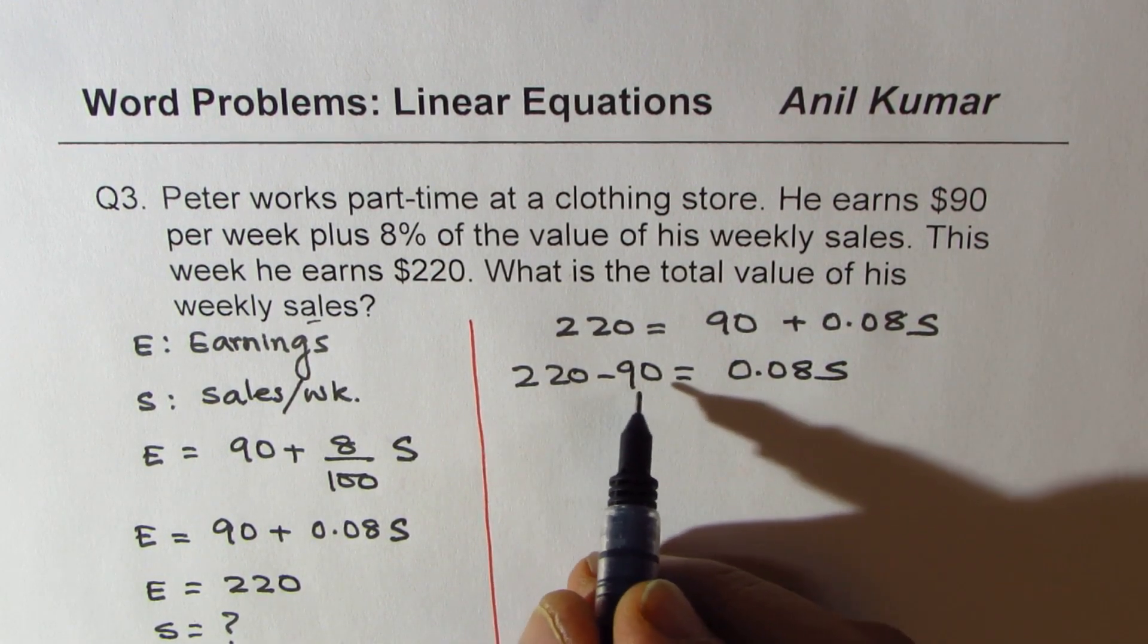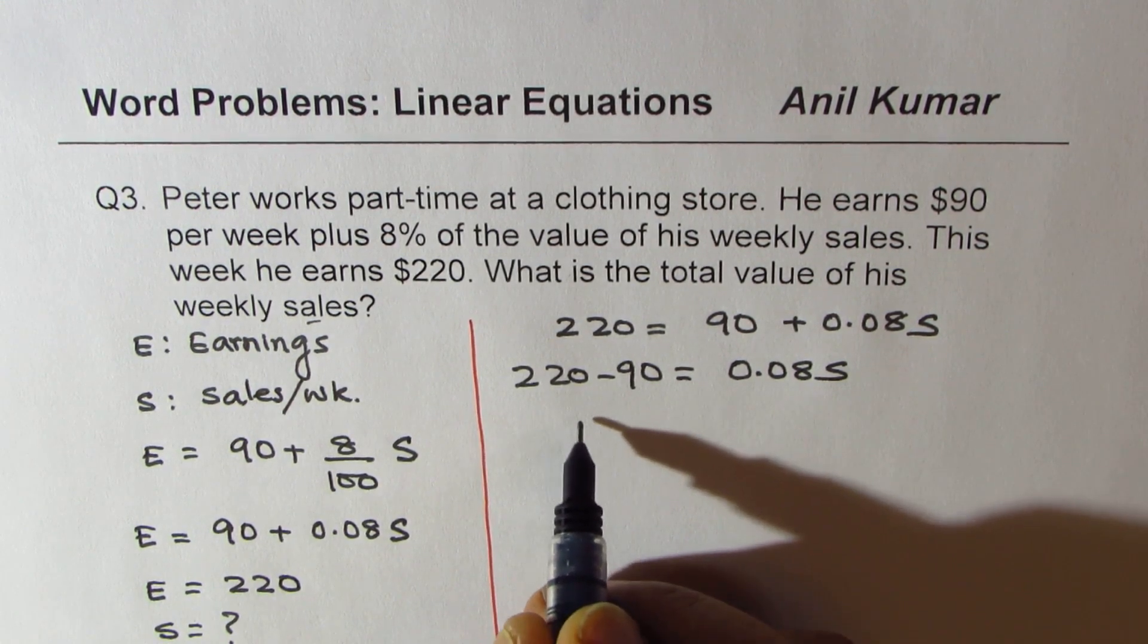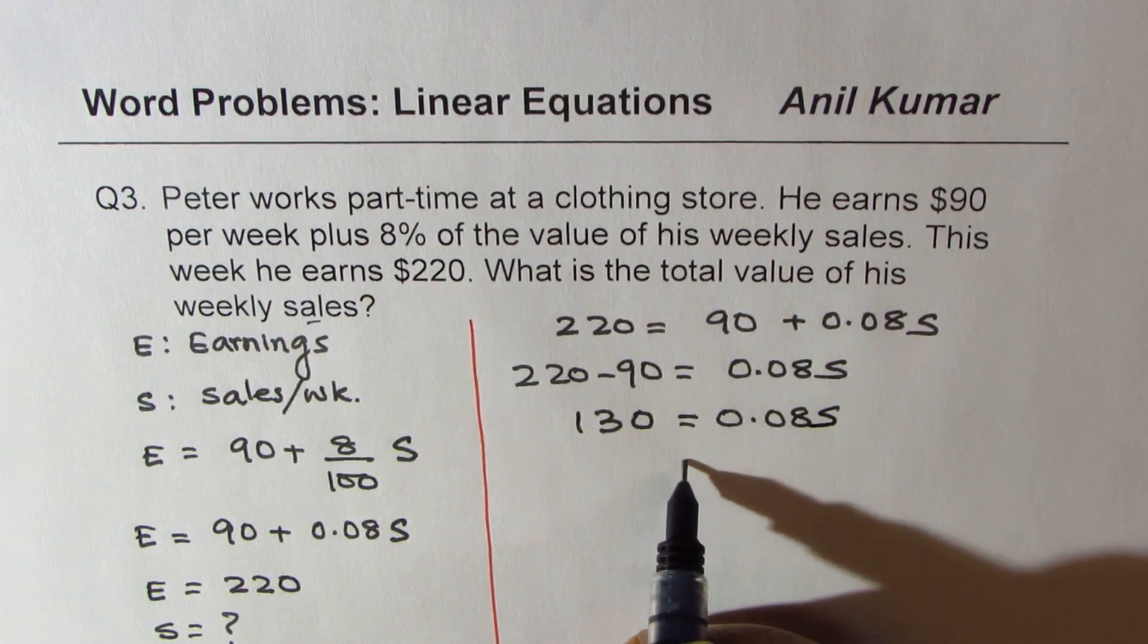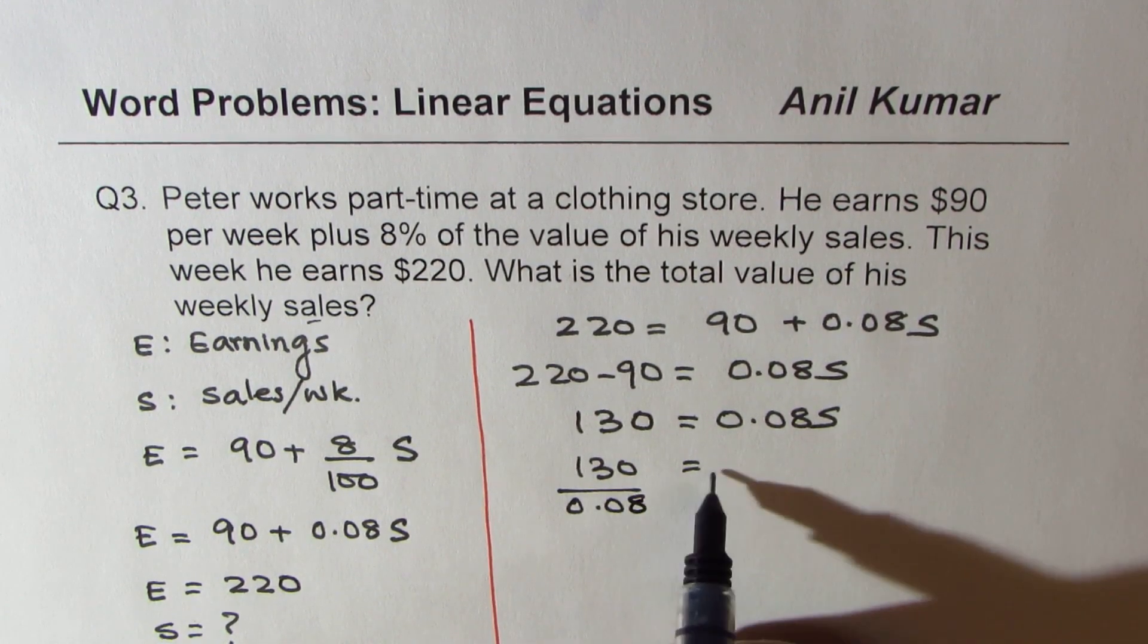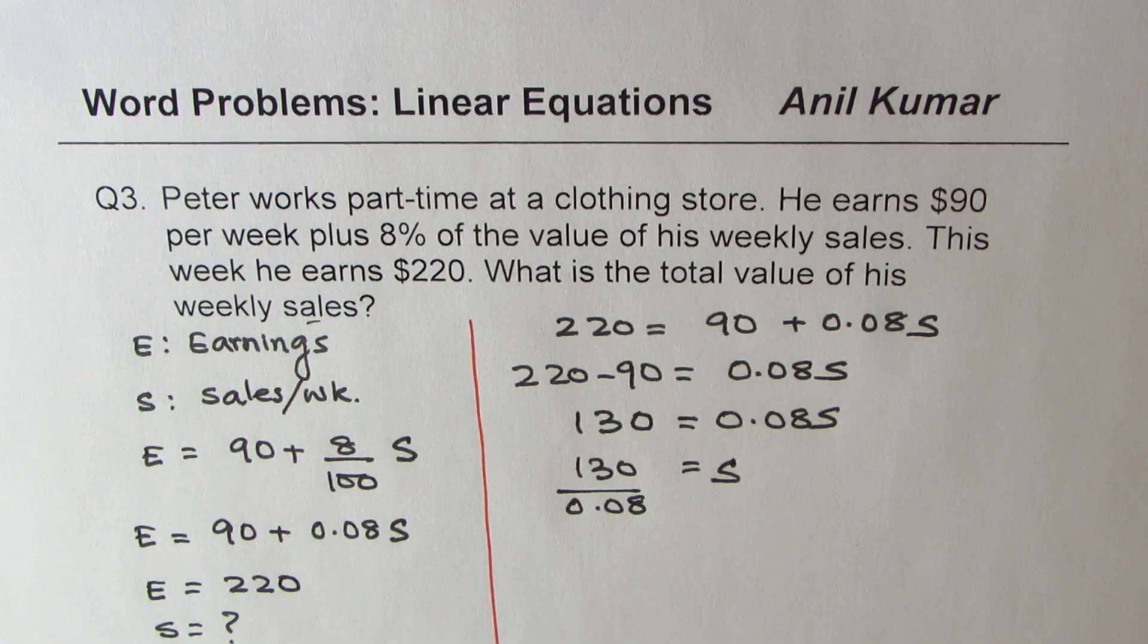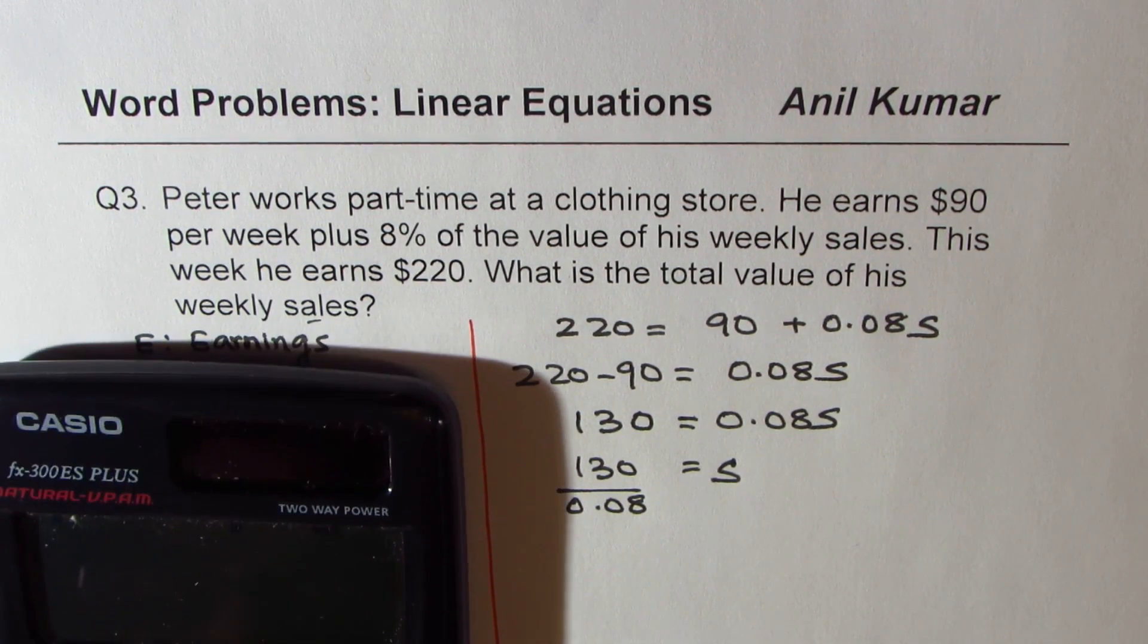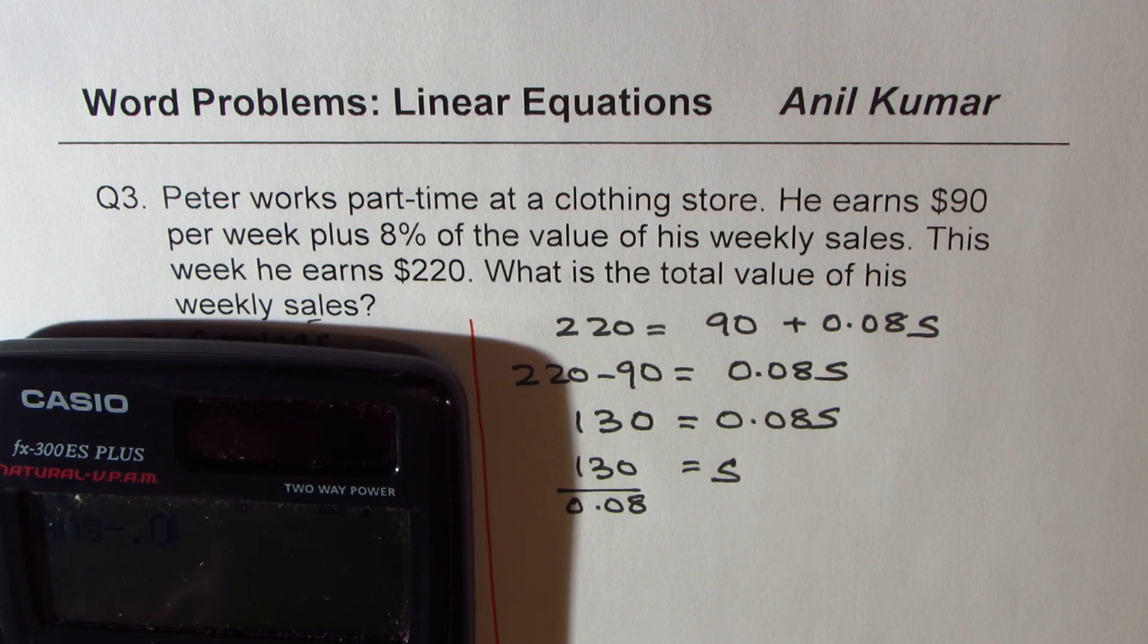Now we have to divide this by 0.08 to get the sales. Let's use calculator. You could approximate, do it. If calculator is not allowed, do it without calculator. So what we get here is 220 minus 90, we get 130 and we are going to divide this by 0.08 and we get 1625.